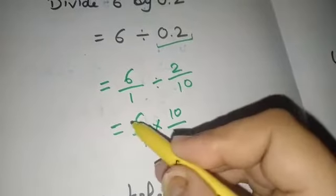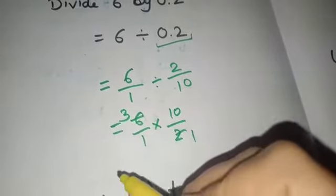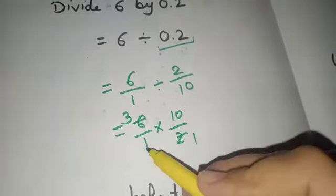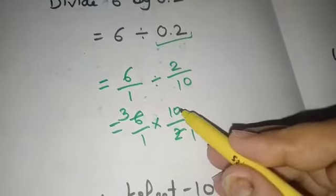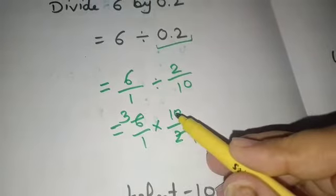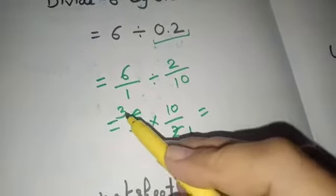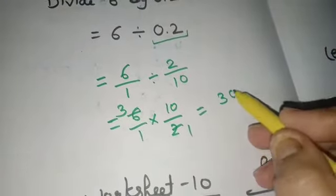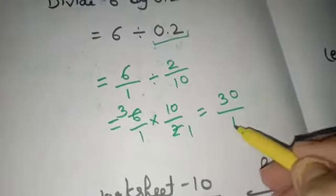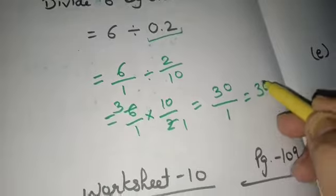2 can be cancelled. Now this 10 cannot be cancelled. As in previous worksheet we were able to cancel these numbers but not now. Multiply the numerator, 3 times 10 is 30, 1 times 1 is 1. The answer is 30.